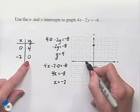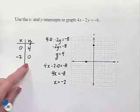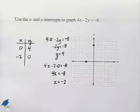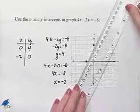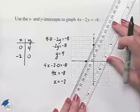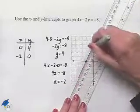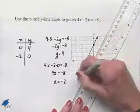And so now we'll plot the point negative 2, 0, and that ends up being our x-intercept. And now that we have these two points and having recognized that this was a linear function, this allows us to connect the dots, drawing a straight line in order to complete the graph.